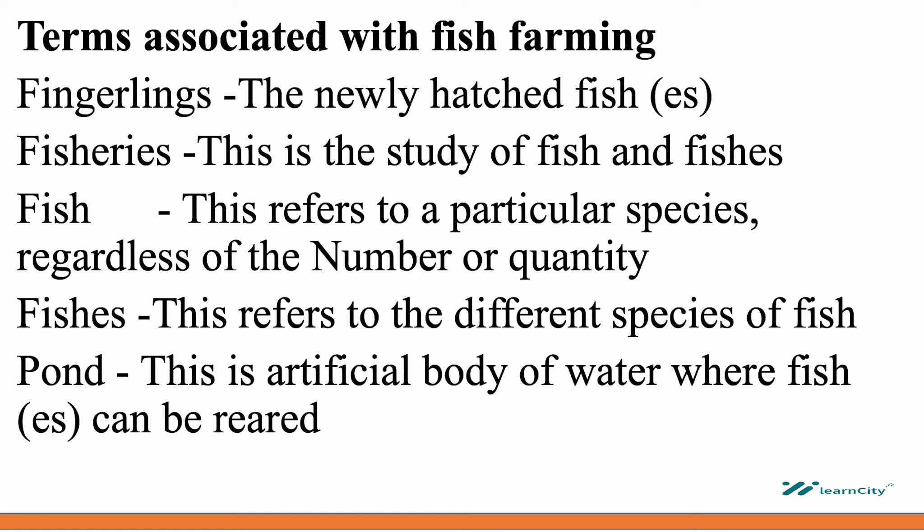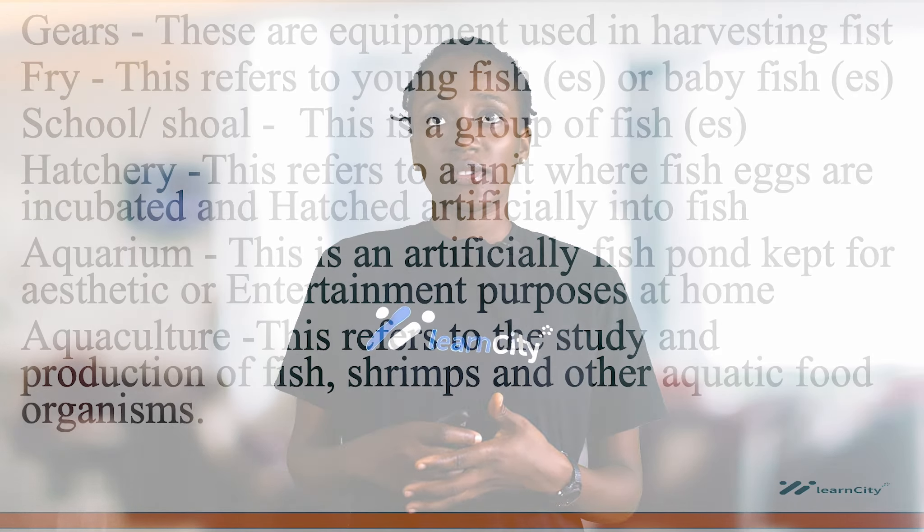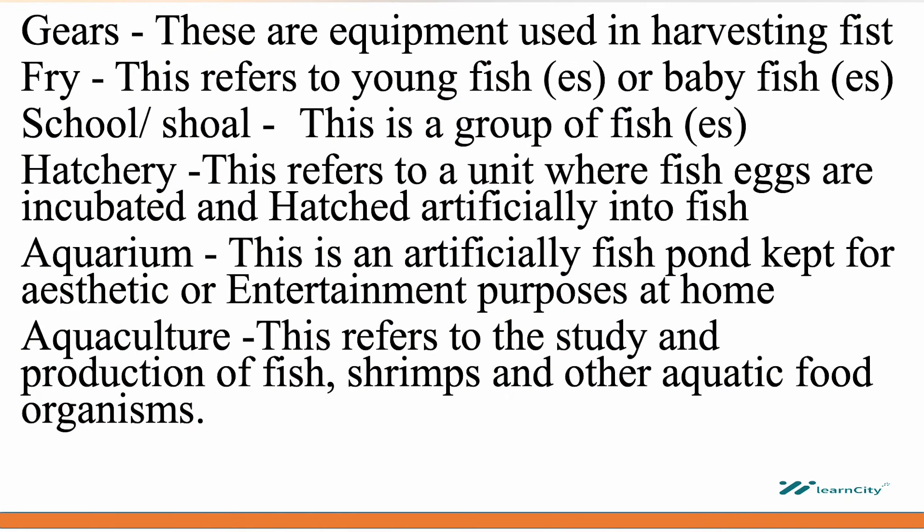Ponds are artificial bodies of water where fish can be reared. We have gills — these are equipment used in catching fish. Fry refers to the young fish, also called baby fish.